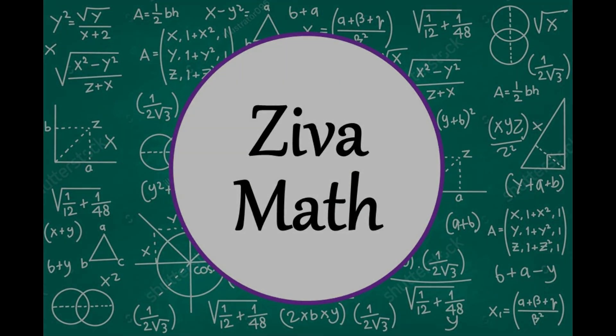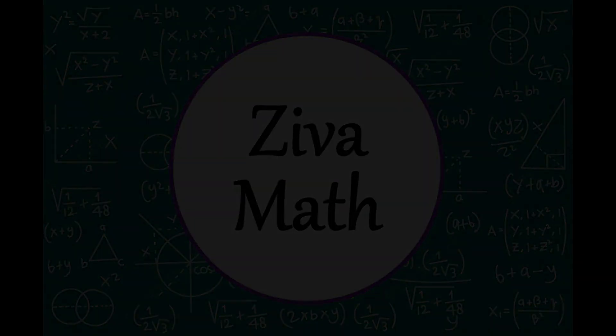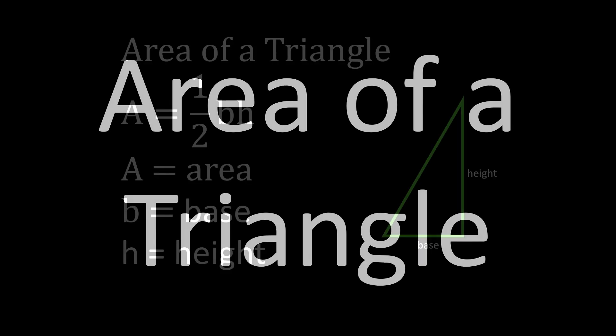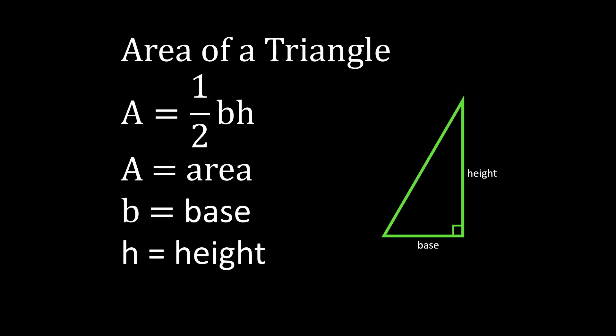Welcome to another Ziva Math video. In this video, we're going to calculate the area of a triangle. The formula to use is area equals one-half bh, where b is the length of the base of the triangle and h is the length of the height of the triangle. Remember, your base and height of the triangle are perpendicular to each other. Let's take a look at our examples.